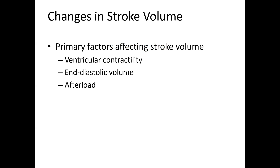The primary factors that affect stroke volume are ventricular contractility, end diastolic volume — we'll remind ourselves what that is in a minute — and then afterload.